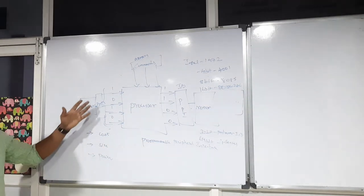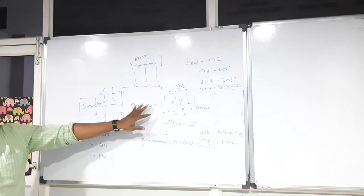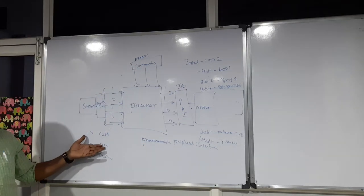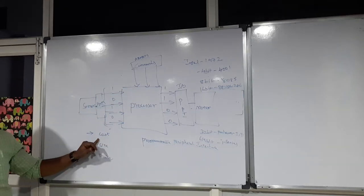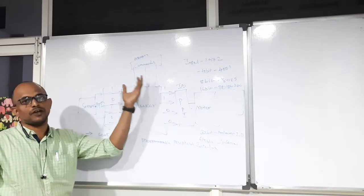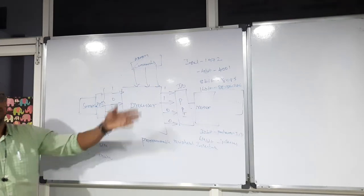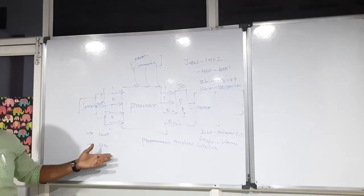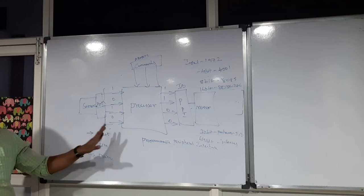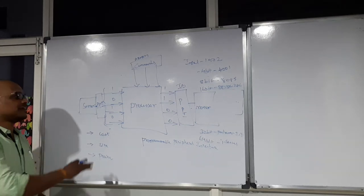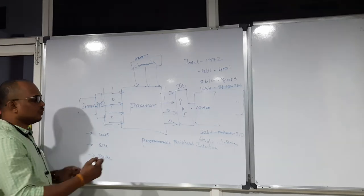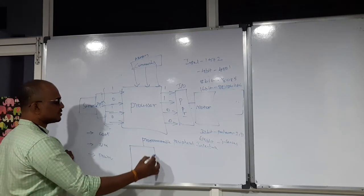Based on these three elements — cost, size, and power consumption — Intel moved to another programmable device by integrating all components on a single chip. To reduce cost, you would need to buy all individual devices from the market, and arranging all components in a circuit increases size. Individual devices may work at different operating voltages — some at 5V, some at 3.3V — requiring different power supplies. To reduce all these complications with processor-based systems, Intel embedded all individual components in a single chip and introduced a new programmable device called the microcontroller.